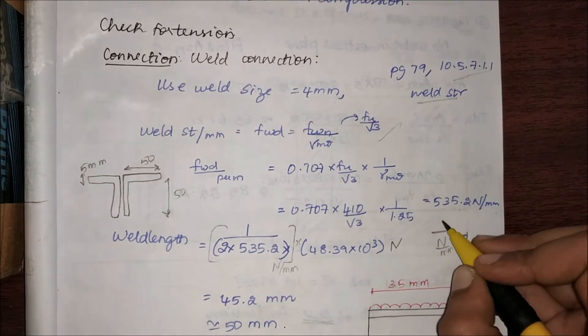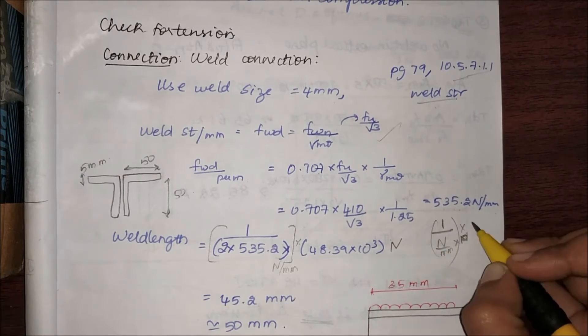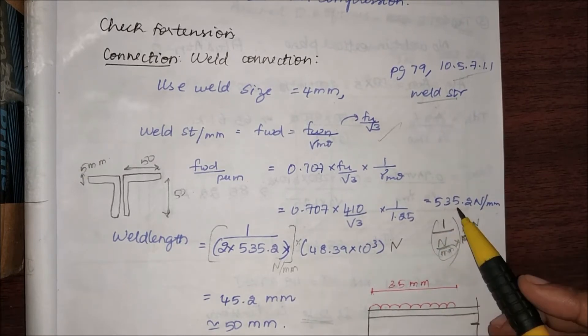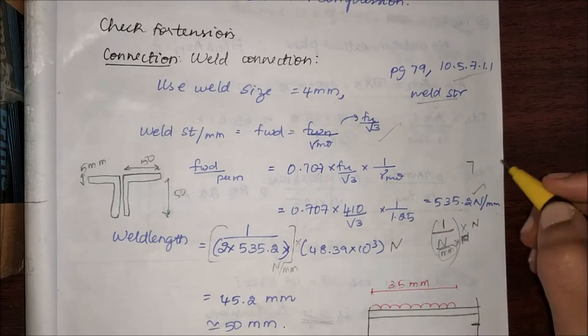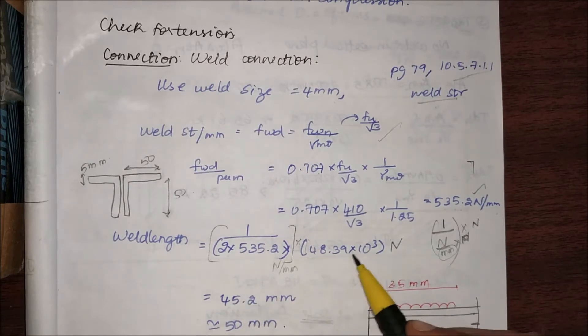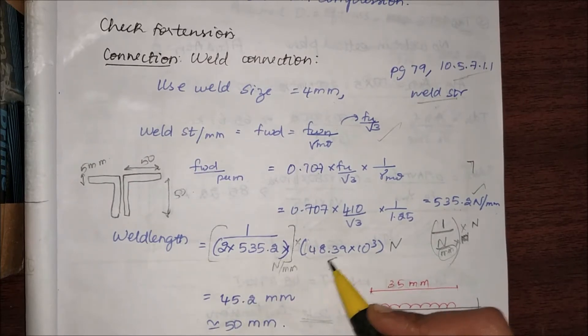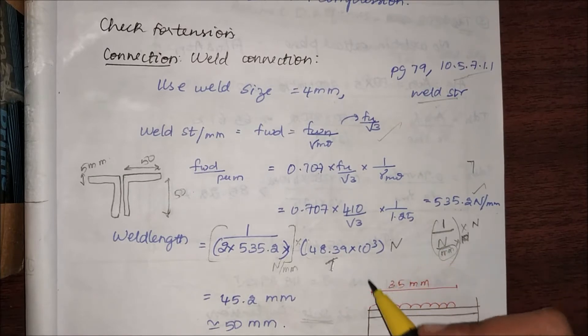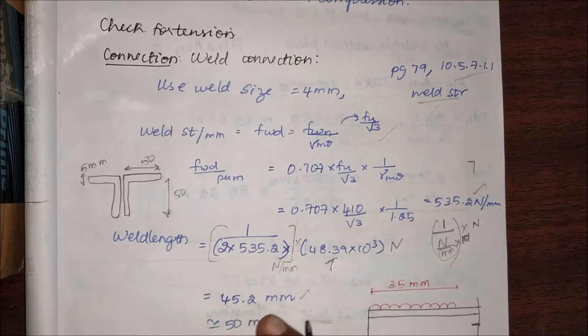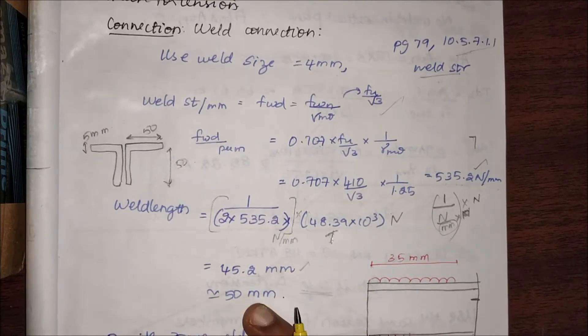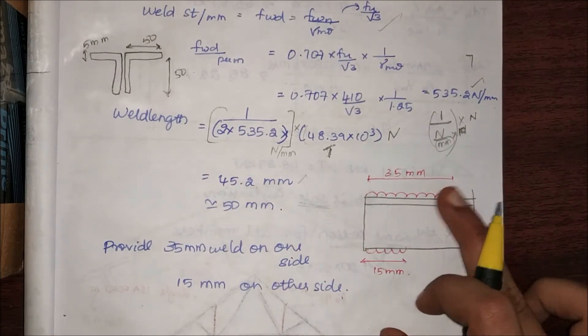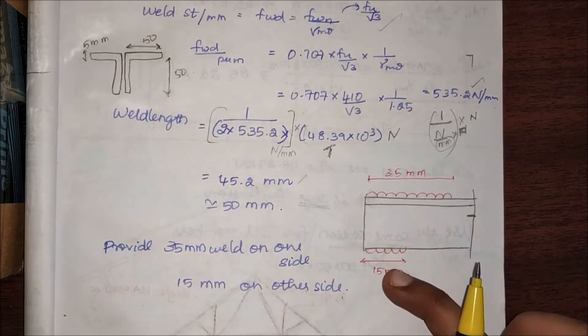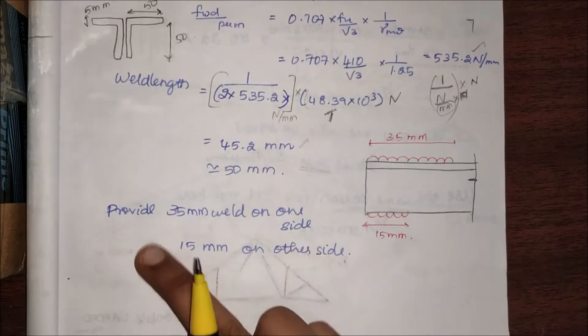1 by strength is for one angle. Since I have two angles, I am going to multiply it by 2 times 48.39 kN (the tension the section has to take). That gives me my answer in millimeters. The weld length is 45.2 mm; I'm going to take it as 50 mm. My weld length I am going to distribute this way: on the top part 35 mm, on the bottom part 15 mm.